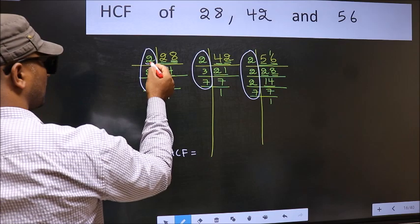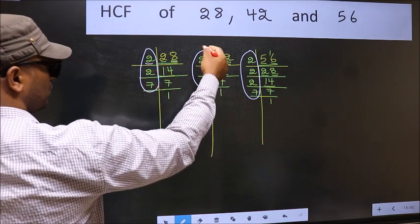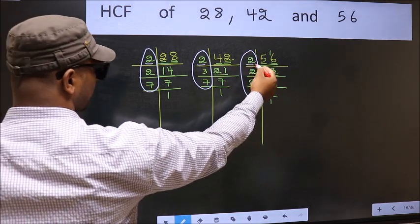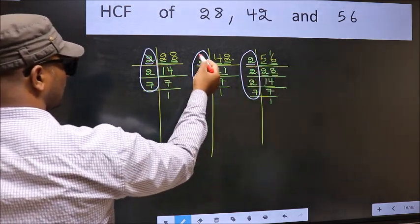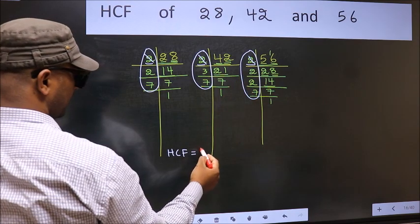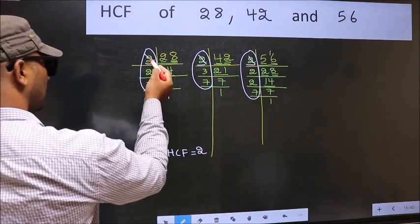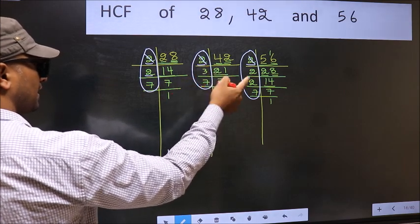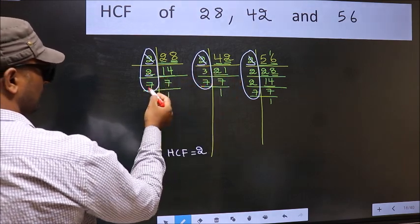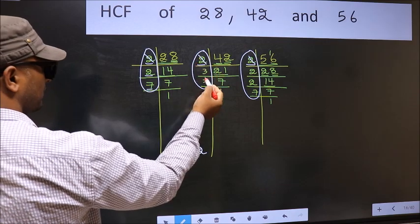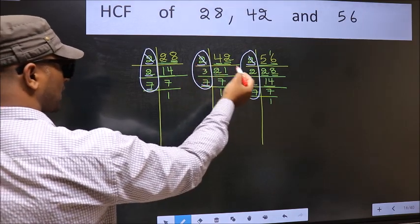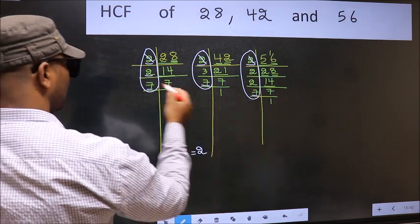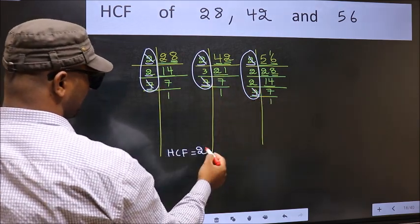Starting with the number 2. Do we have 2 here? Yes. Go to the next place. Do we have 2 here? Yes. No. So no need to check in the other place. Next number 7. Do we have 7 here? Yes. Go to the other place. Do we have 7 here? Yes. So cut 7 and write here.